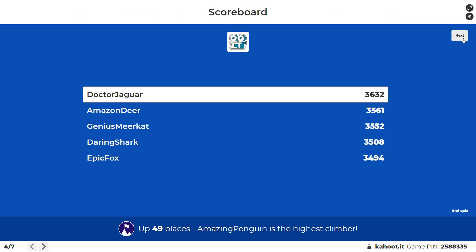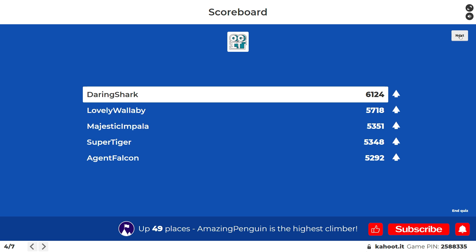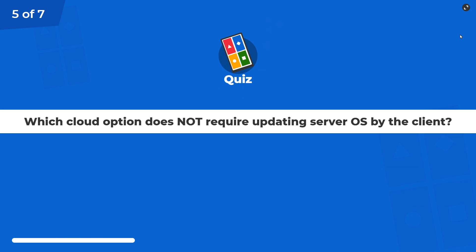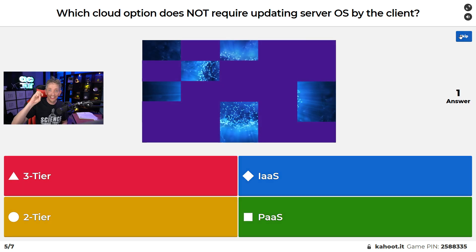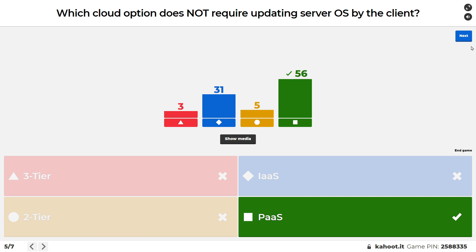Question five of seven: Which cloud option does not — I repeat, does not — require updating the server operating system by the client themselves? The answer is Platform as a Service. Let's talk about the cloud service models for a moment.